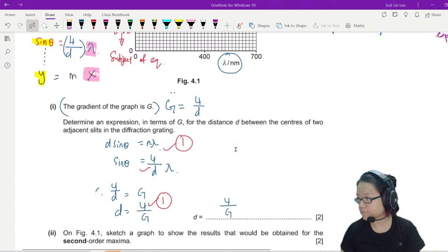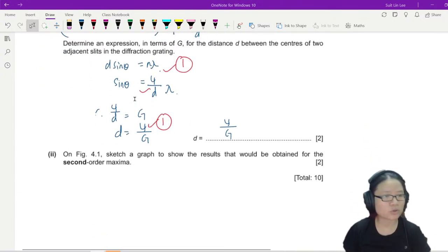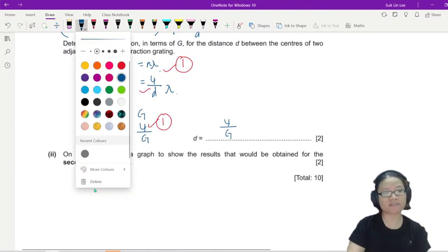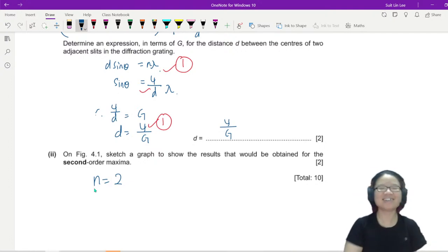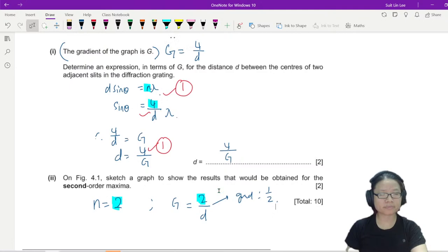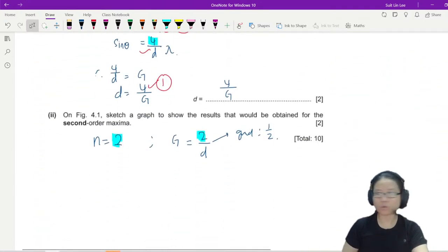In Figure 4.1, sketch a graph to show the result that would be obtained for second order maxima. Now we have n is equal to 2. So your n equal to 2, it means your gradient - the gradient that was previously 4 over d now becomes 2 over d, because the n was 4, now the n is 2. You replace 4 with 2. So the gradient is half. First thing I know here: gradient is half. But just because the gradient is half doesn't mean that you know where to draw the line.